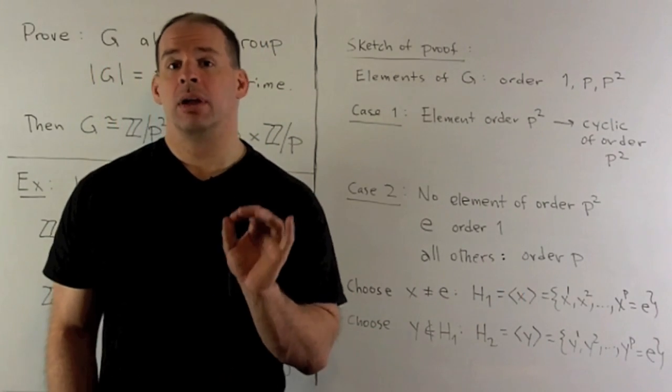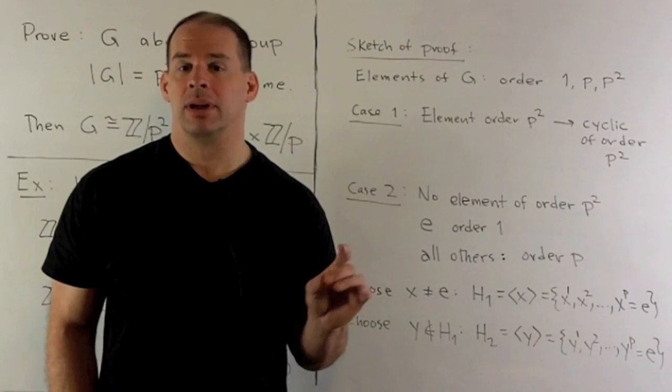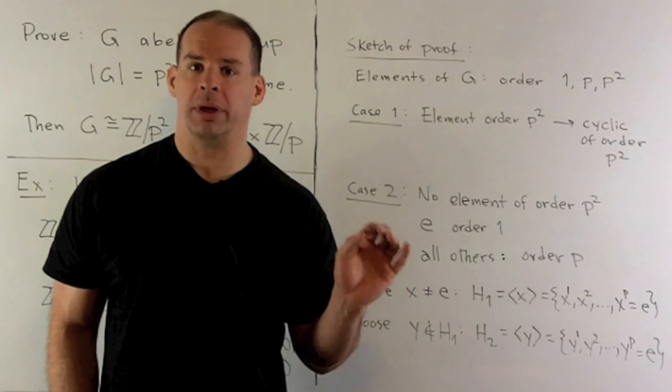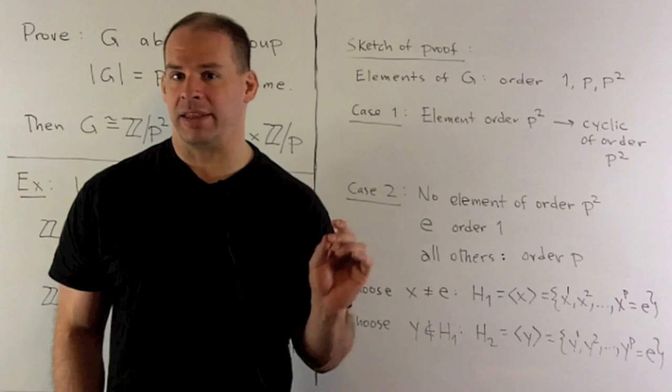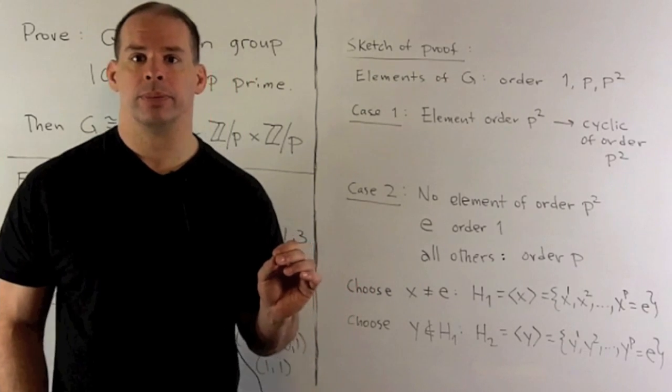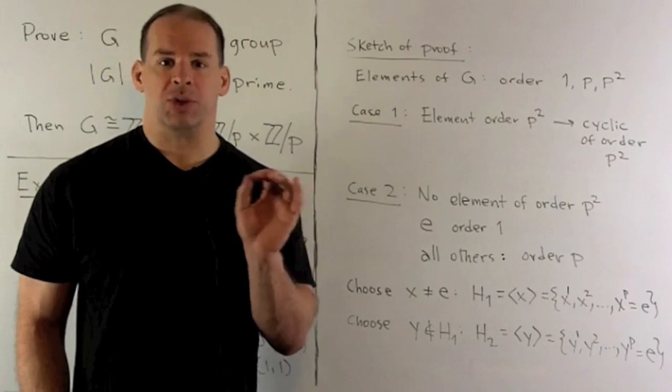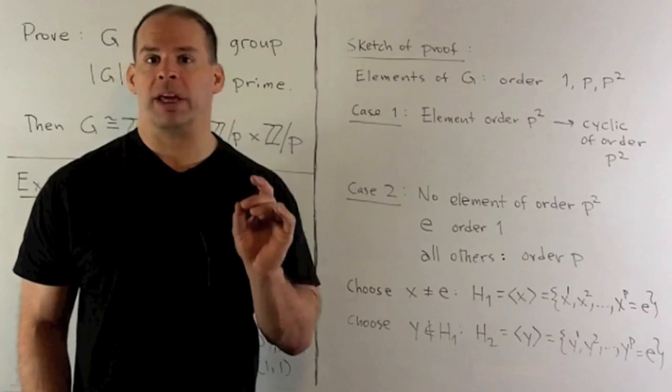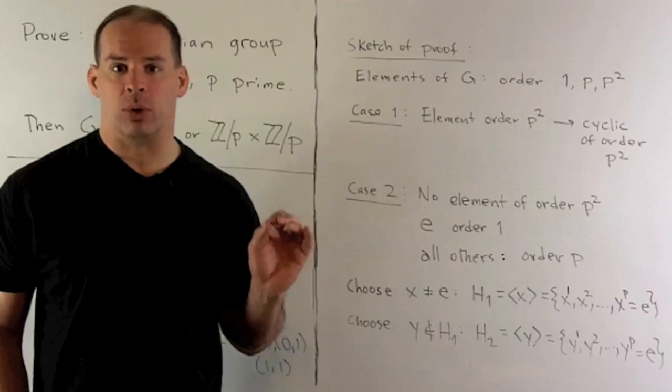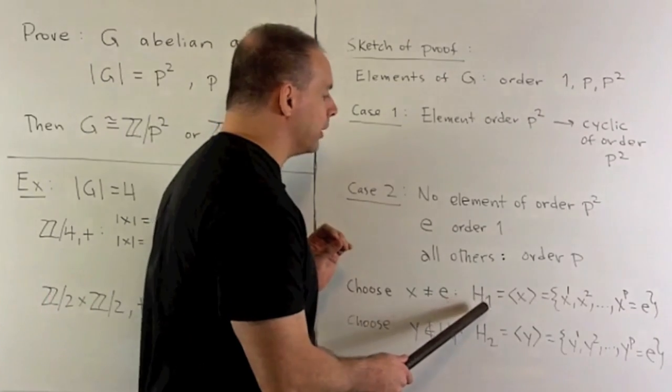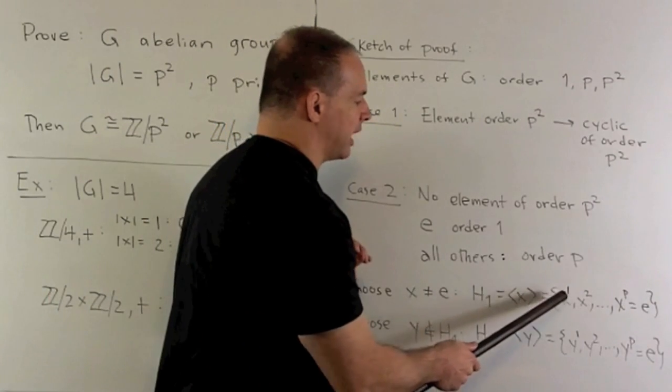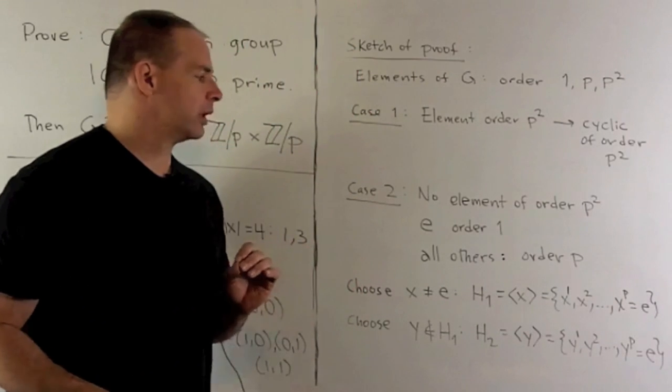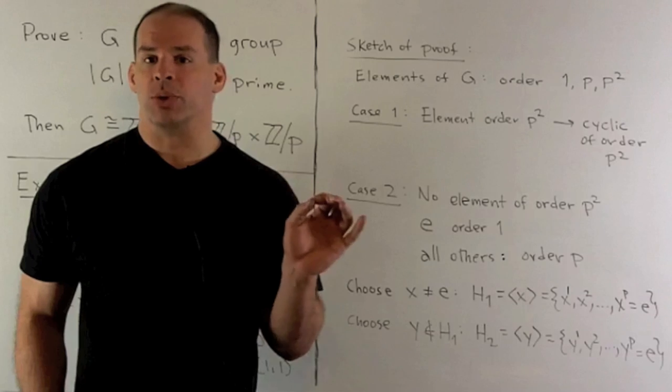So we'll suppose there's no element with order p squared. It's going to mean all elements have either order 1 or order p. The only way we can get order 1 is if we're looking at the identity element. Now to start, I just pick any element that's not the identity element. So I'll call that x. x has order p. So it's going to generate a subgroup of order p. We'll call that H1. So we just take x, run through all the powers. x to the p is going to be the identity.